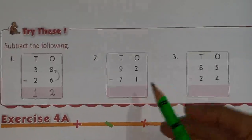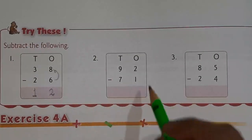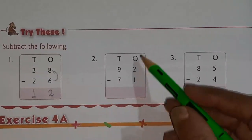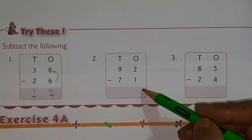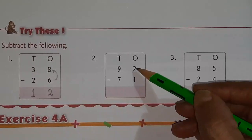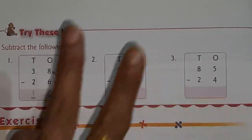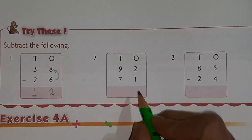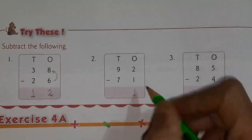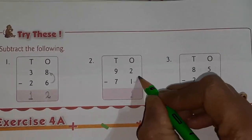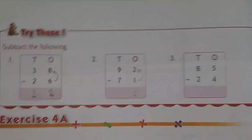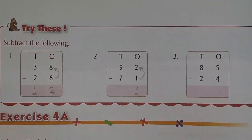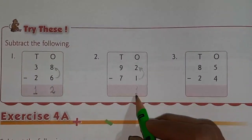Next one, second one: 92 minus 71. Always start from the ones column. Open 2 fingers, cut 1, there remains 1, so you can write it here. Otherwise, 1 after you count till 2 — after 1 comes 2 — so that is also 1. You can write it here.